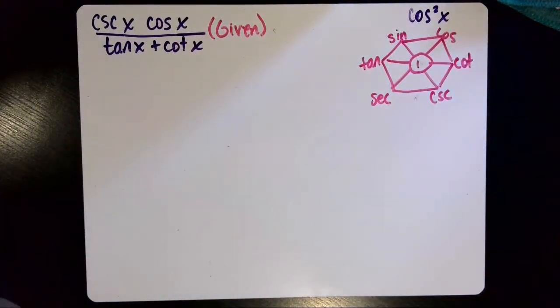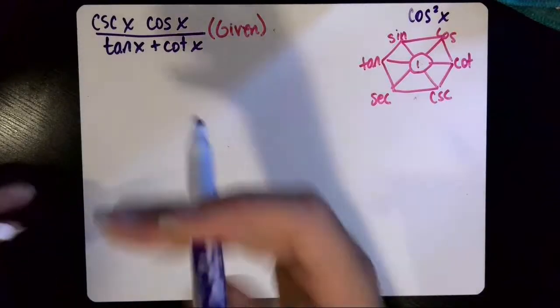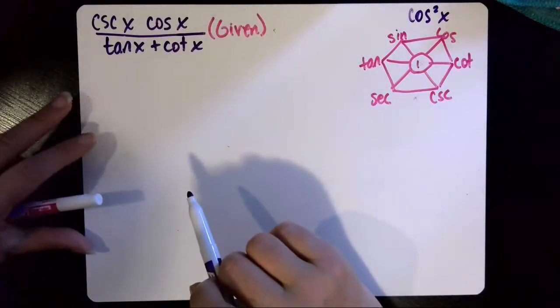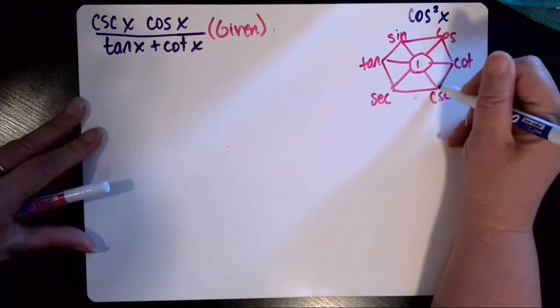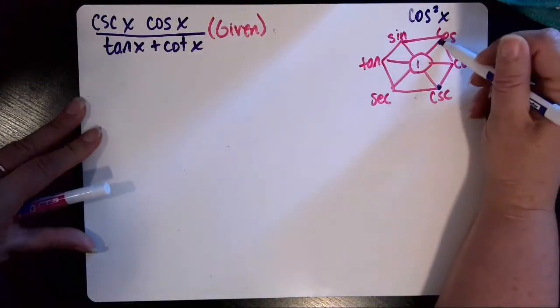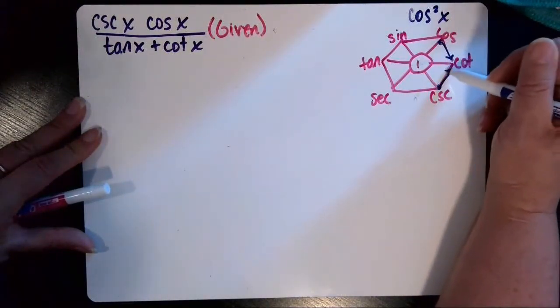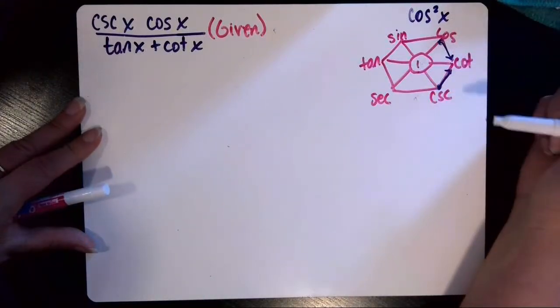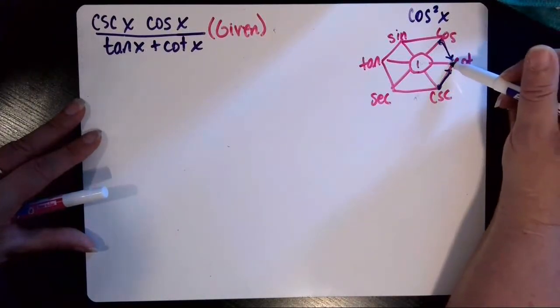Okay, so there's my trig identities hexagon. And if I look at my numerator here, cosecant times cosine, here's cosecant on the hexagon, here's cosine on the hexagon. And if you recall, the center of those two where they come together is the product identity.